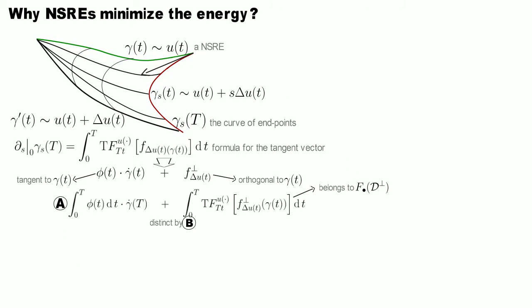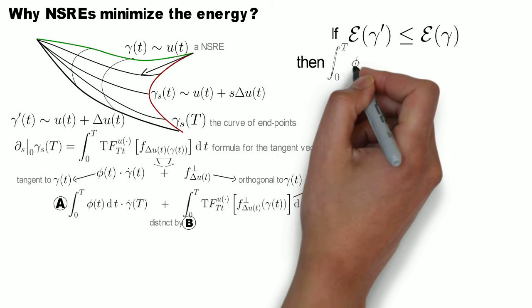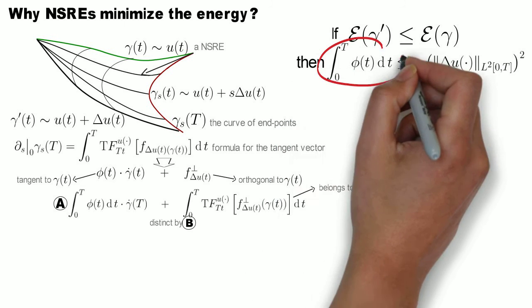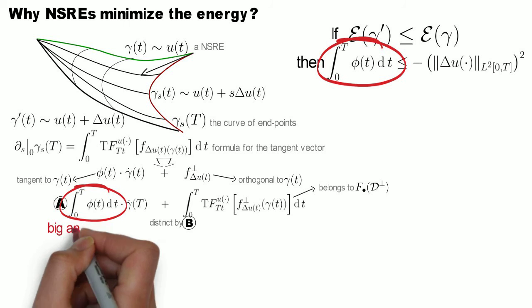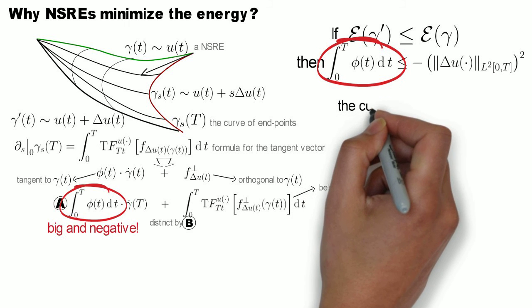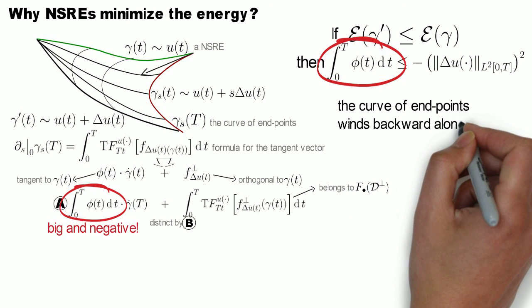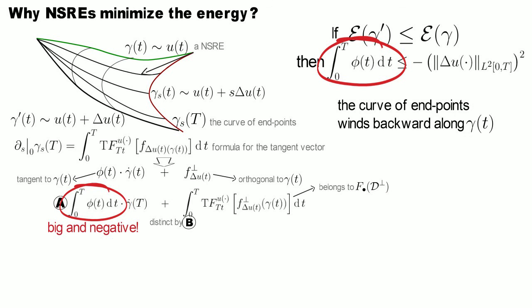It turns out that if the energy of gamma prime is smaller than the energy of gamma, then this tangent part is big and negative. To sum up, the geometric characterization of the normal Subriemannian extremal gamma implies that if any other curve gamma prime has the energy smaller than the energy of gamma, then the curve of endpoints of the natural homotopy joining gamma and gamma prime has to wind initially backwards along gamma.